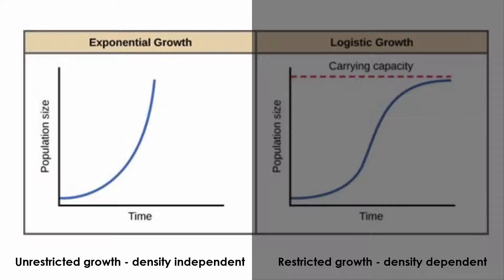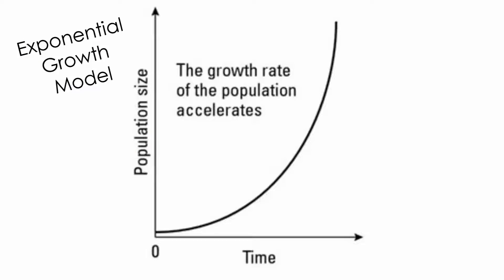In the exponential growth model, population increase over time is a result of the number of individuals available to reproduce without regard to resource limits. In exponential growth, the population size increases at an exponential rate over time, continuing upward as shown in this figure. The line or curve shows how quickly a population can grow when it doesn't face any limiting resources. The line creates a shape like the letter J and is sometimes called a J-curve.